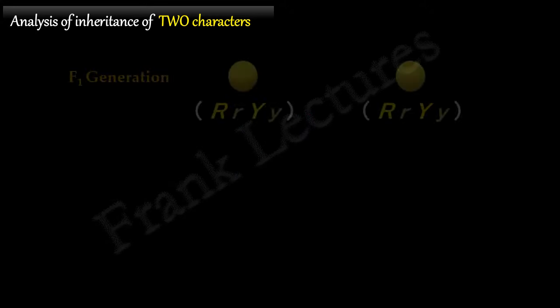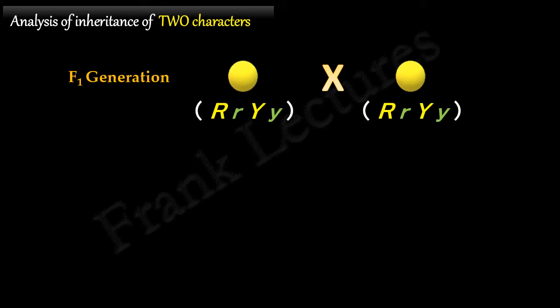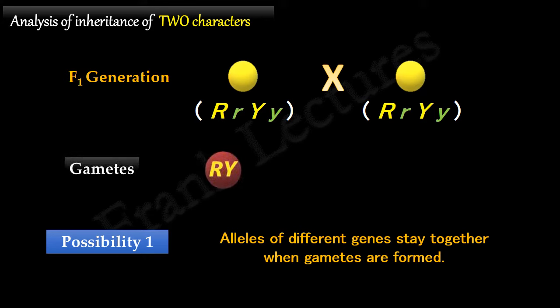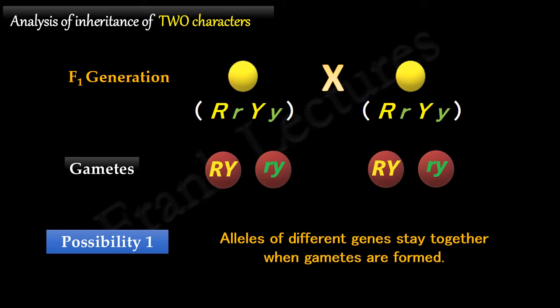To know the answer, Mendel self-fertilized the F1 plants. Let's first predict the progeny of the F2 generation separately according to the two possibilities. The genotype of both parents in the F1 generation is capital R, small r, capital Y, small y. The first possibility states that the alleles of different genes stay together when gametes are formed. According to this possibility, only two types of gametes will be formed: capital R, capital Y and small r, small y. This means the allele for yellow color will always stay with the allele for round seed shape, and the allele for green seed color will always stay with the allele for wrinkled seed shape. Thus, the transmission of one particular allele would depend on the transmission of another.